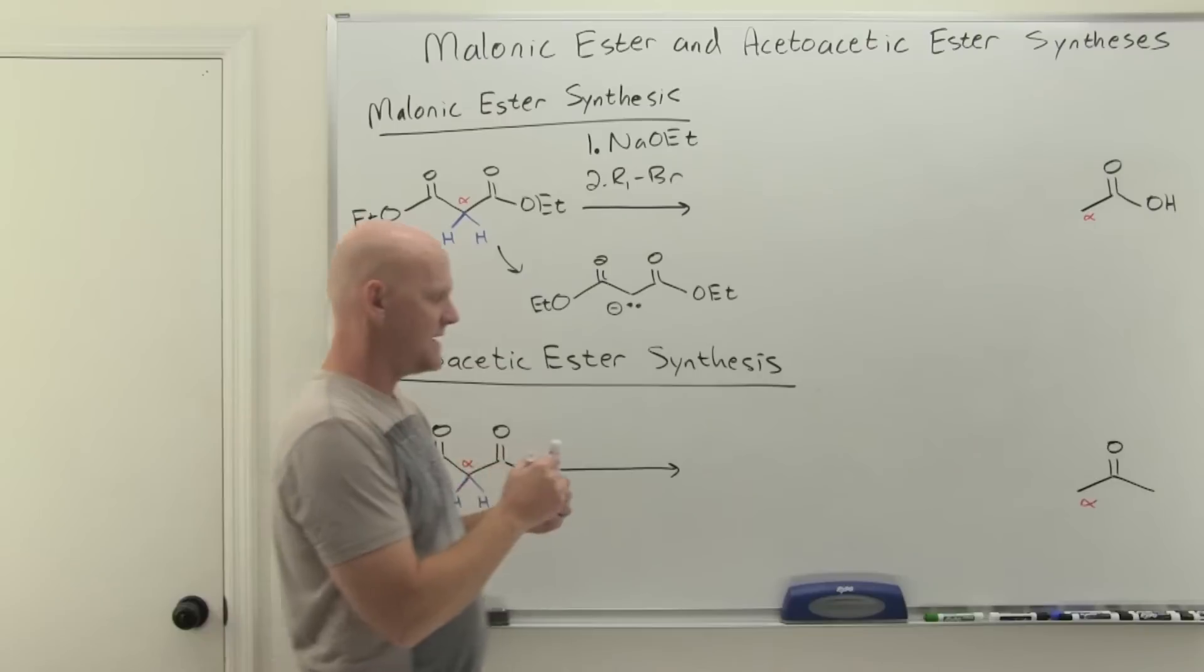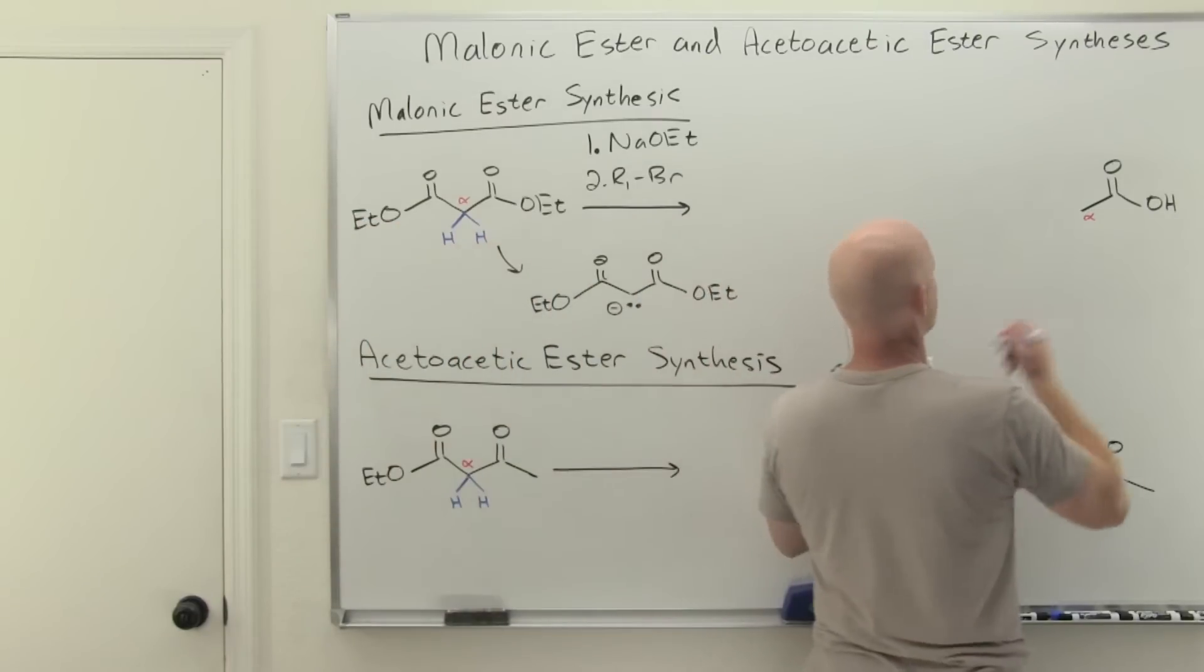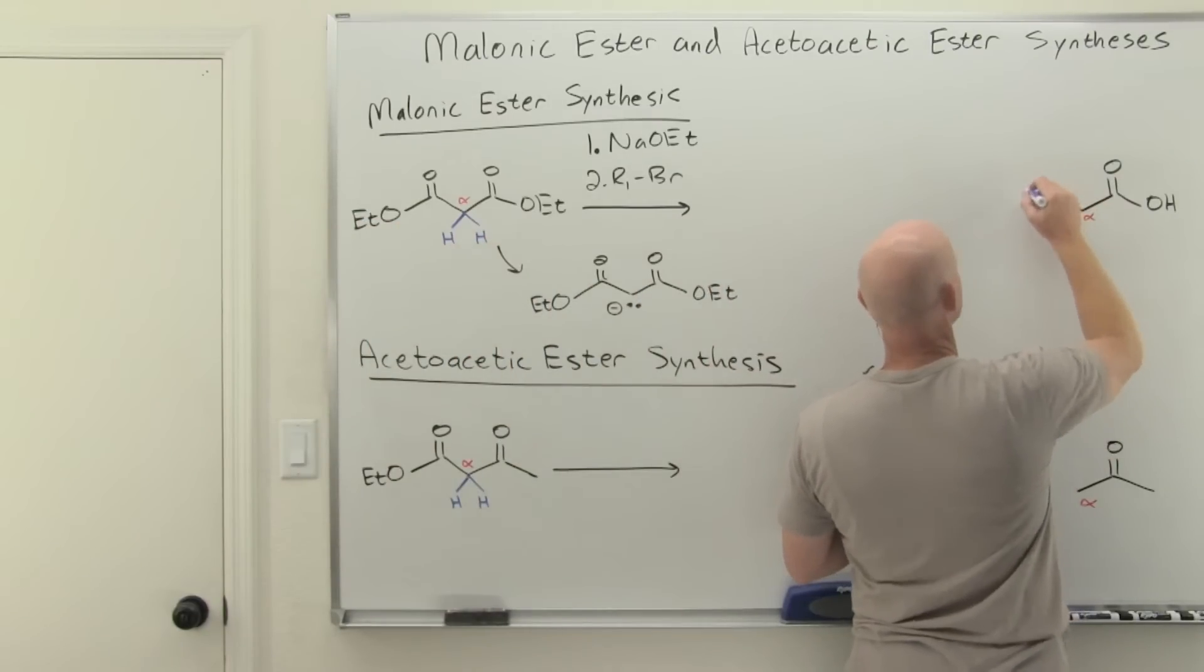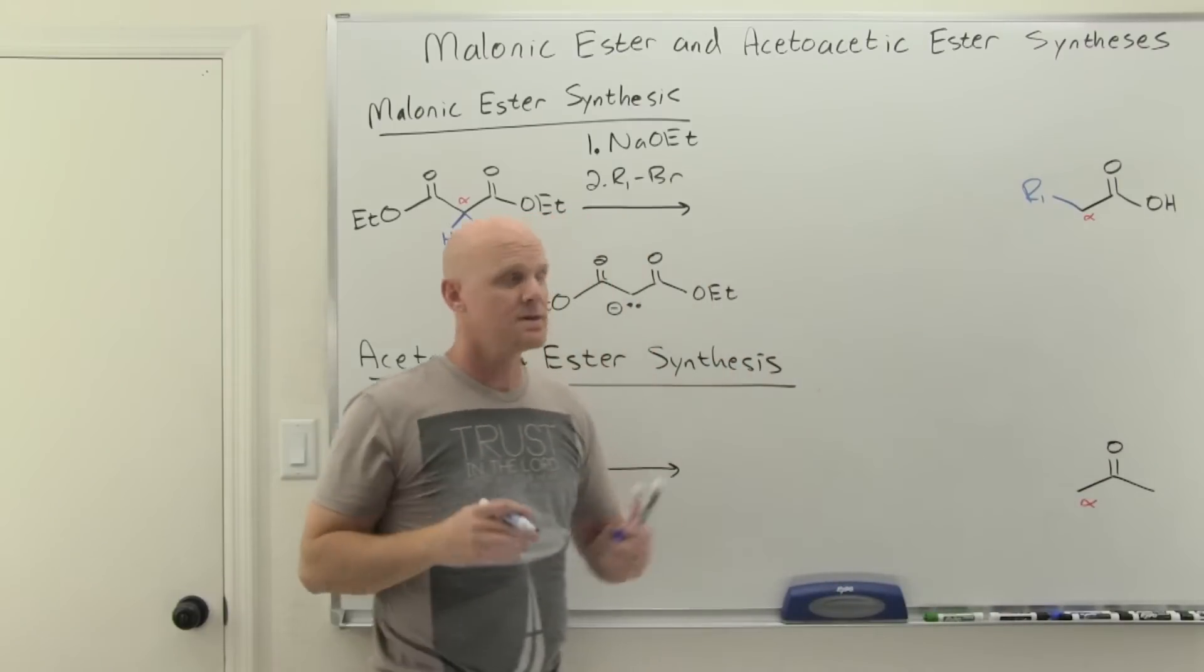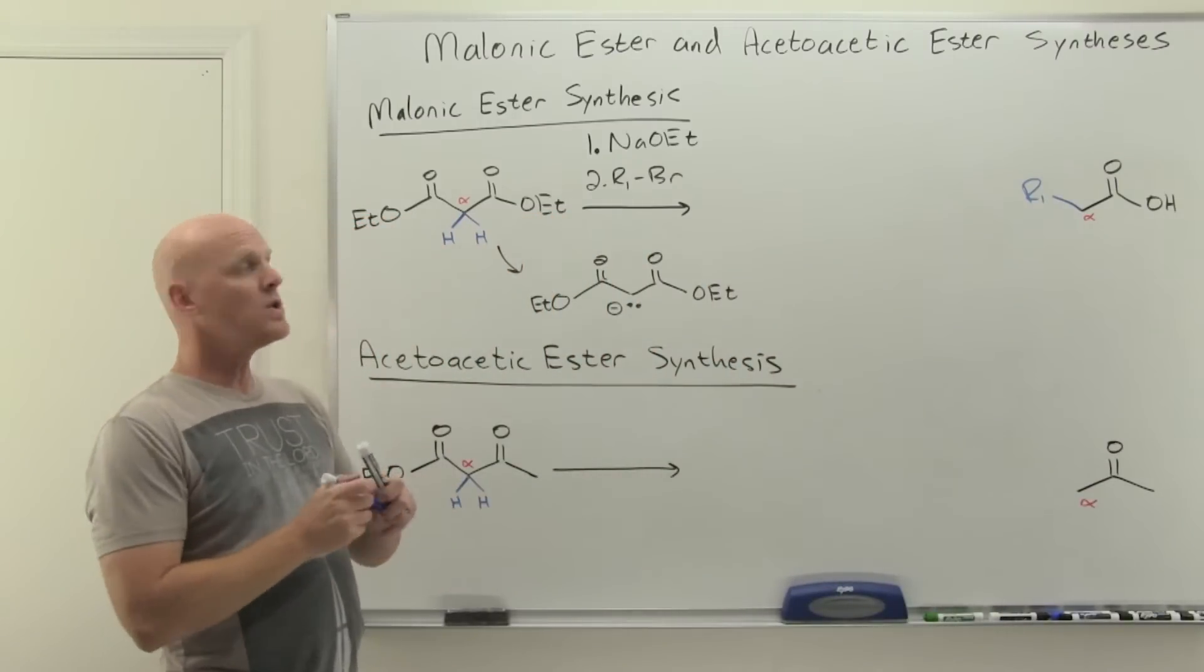Your alpha carbon is going to replace one of these hydrogens with whatever that R1 group is. And again, it's best if it's methyl or primary. And so now all of a sudden we are going to have attached to our alpha carbon R1, whatever it is.